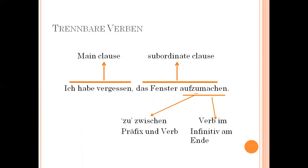Whenever there is a separable verb, 'zu' must be placed between the prefix and the verb. 'Aufzumachen' is written as one word. In the previous sentence, 'zu gehen' was written separately, but in the case of a separable verb, when you add 'zu,' it becomes one word and must always be written together. So, to summarize: in the subordinate clause, the verb goes at the end in its original form, and before that verb 'zu' must be placed.